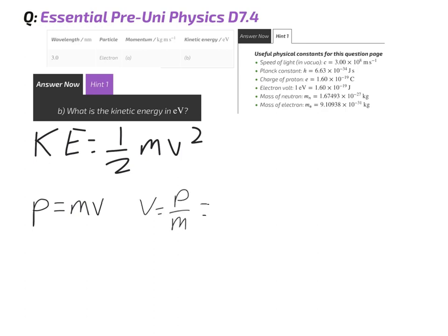The momentum was 2.21 times 10 to the minus 25. The mass is 9.10938 times 10 to the power of minus 31. And that gives us a velocity of the electron as 2.43 times 10 to the power of 5 meters per second.